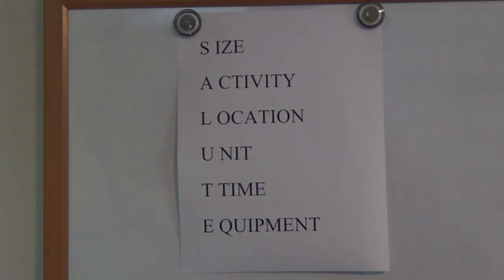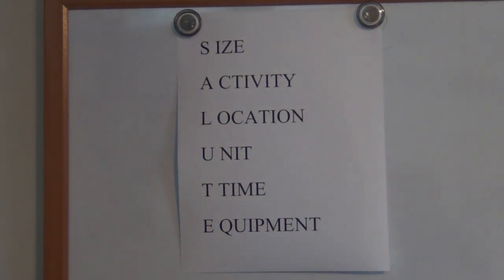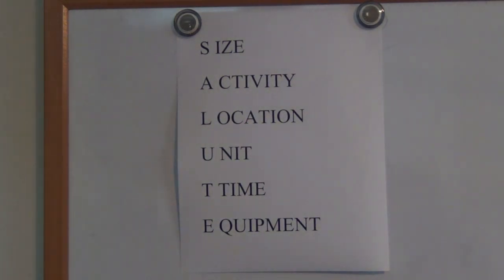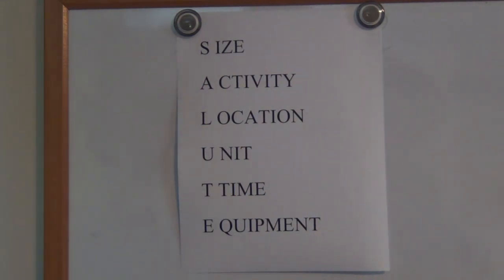U stands for unit — for example, say they are wearing all green jackets, that would be their unit. Maybe they are wearing some military patches, that would be their unit. T stands for time — the time that you saw them at.